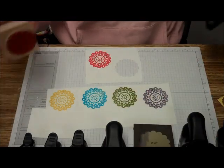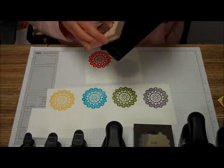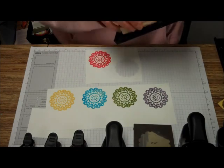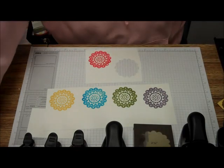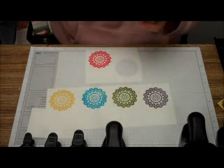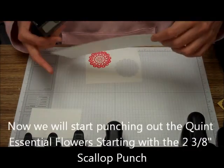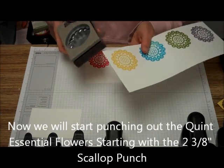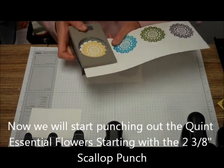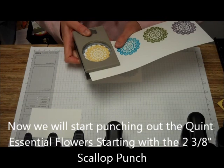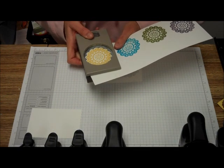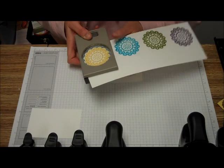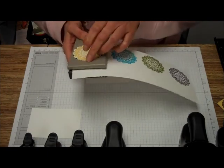What we're going to be doing now is punching out these. We're going to start with the 2-3/8 inch and use the full 2-3/8 inch on the Daffodil Delight. You're going to line that up, and use your punches upside down so you can see what you're doing. You're going to punch that out.